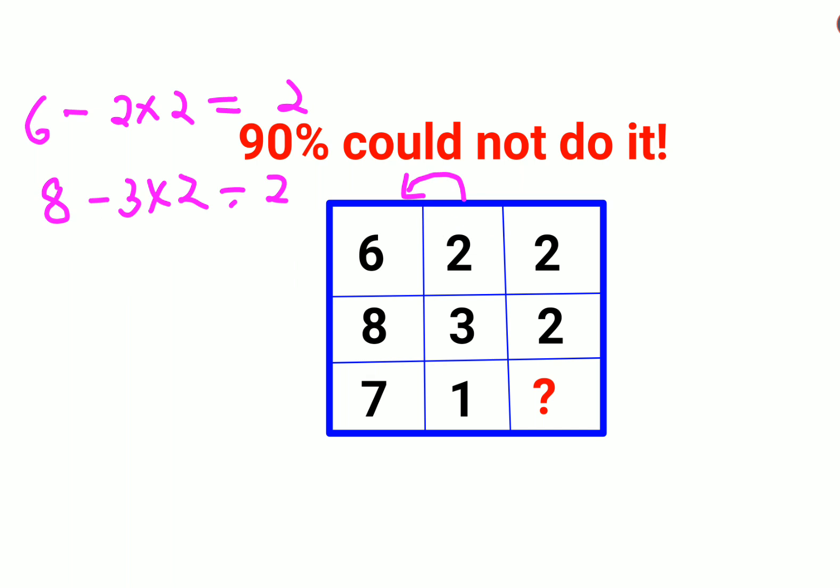So we will have 7 minus 2 into 1, or rather we have the number as 1 into 2, that gets you 7 minus 2. So the answer for your question mark comes out to be 5.